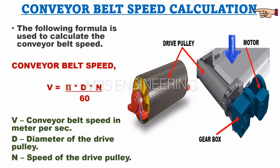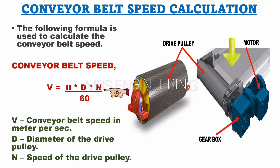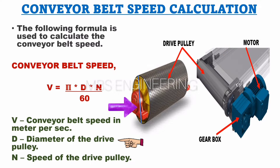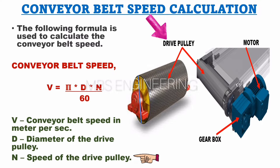To calculate the conveyor belt speed, we use the following formula: V equals pi multiplied by D, multiplied by N, and then the obtained value is divided by 60. In this formula, V stands for the conveyor belt speed in meters per second, D represents the diameter of the drive pulley, and N is the speed of the drive pulley.